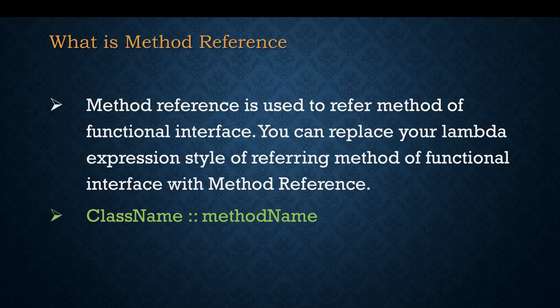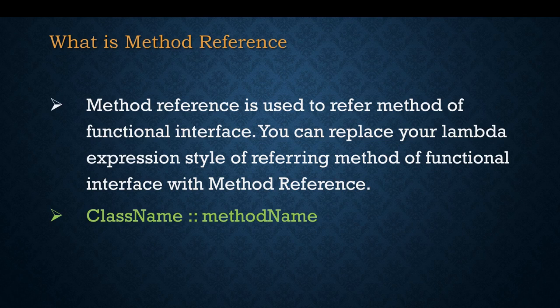Method reference is used to refer to a method of a functional interface. It is a style of implementing methods available within a functional interface. We can implement a functional interface using a lambda expression, but instead of using a lambda expression we can also use method reference style of implementation. It is even more concise than a lambda expression. When we use method reference, syntactically we write class name, then double colon, and then method name.